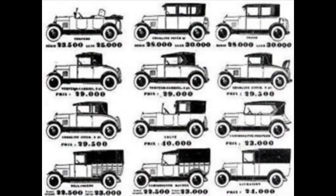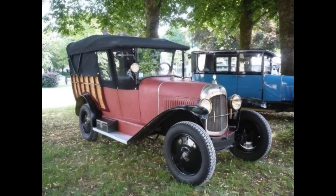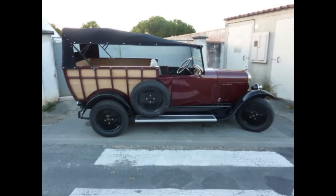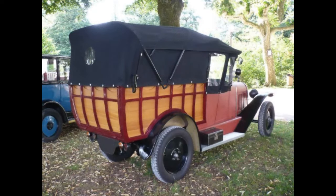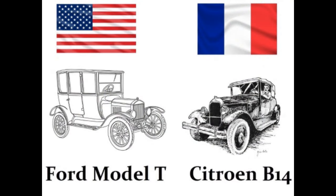The B14 was offered in seven body styles, with the Normandy being the utility model. The car proved to be successful, with almost 128,000 units being sold in its three-year model run. The Citroën B14 was to France what the Model T Ford was to the United States.